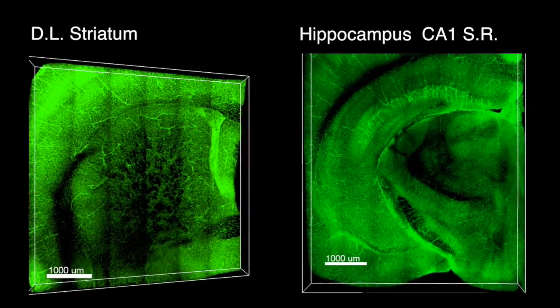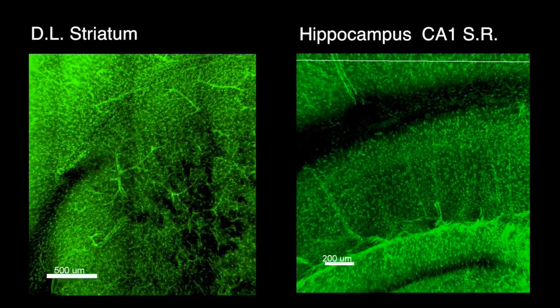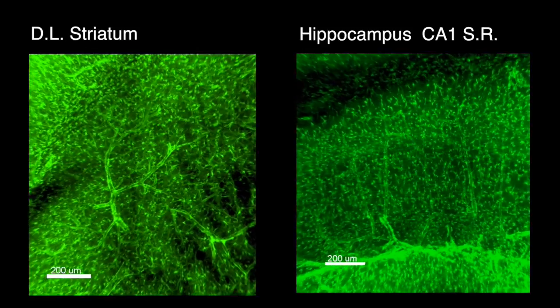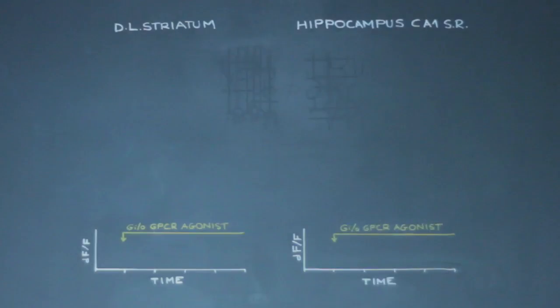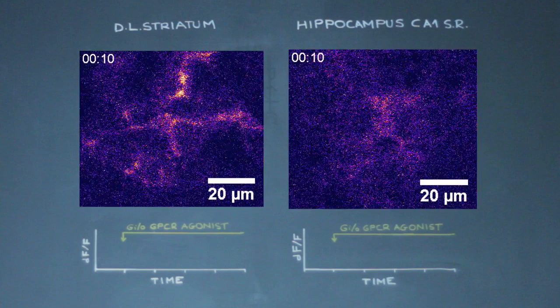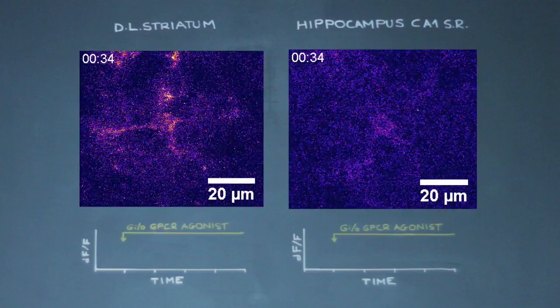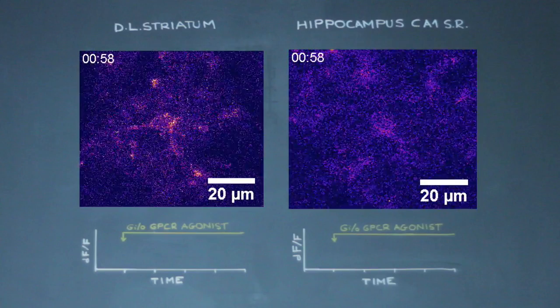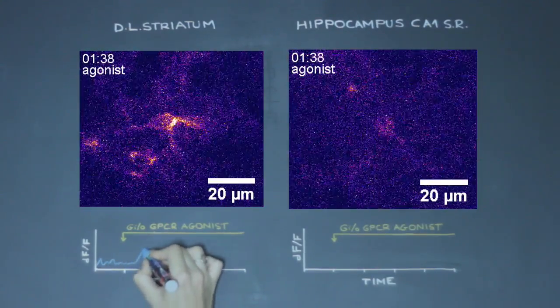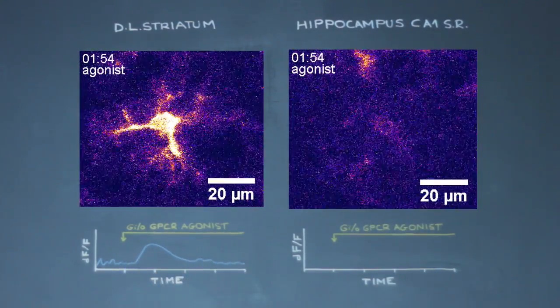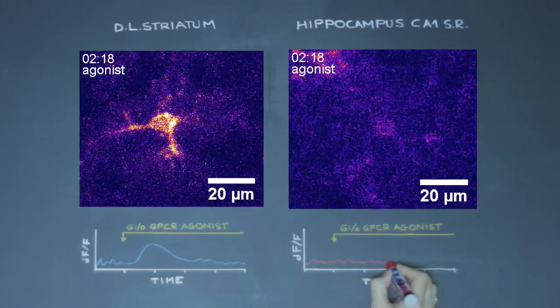We first looked at the bigger picture of astrocytes in the striatum and hippocampus. We found that astrocyte densities were similar; therefore both regions contained plenty of astrocytes. However, astrocytes in these regions differed in several ways. Astrocytes display complex intracellular calcium signals in the cell body, branches, and processes. We found that activation of endogenous and designer exogenous GI-GO coupled GPCRs caused a robust increase in striatal astrocyte calcium signals. This was not seen in hippocampus astrocytes.